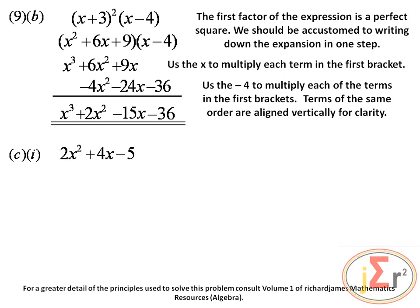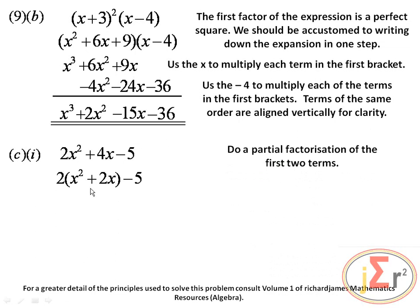We have an expression and we are going to write it in the suggested form requiring completion of the square. First, we complete the square by doing a partial factorization of the first two terms, taking the x squared coefficient as a factor so we can have x squared alone. So 2 into 2x squared gives x squared, and 2 into 4x gives 2x, resulting in 2(x squared plus 2x).